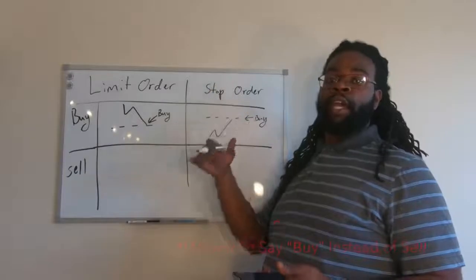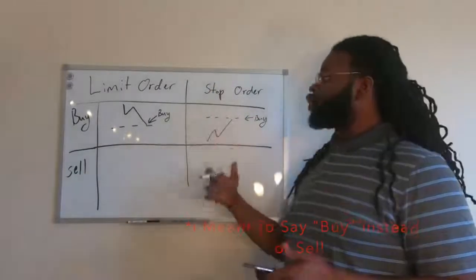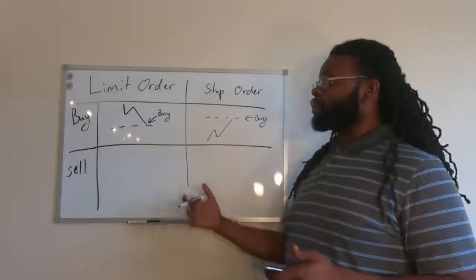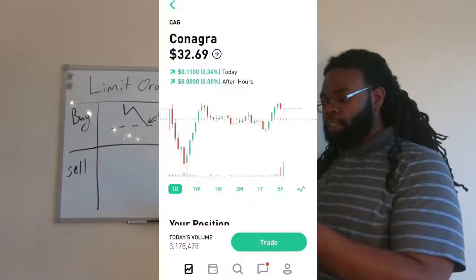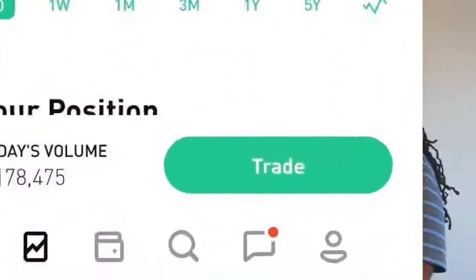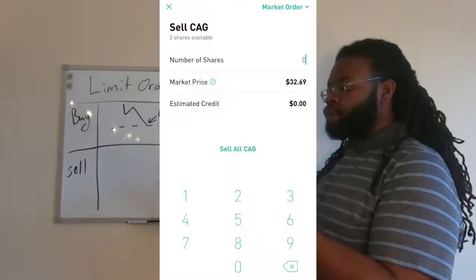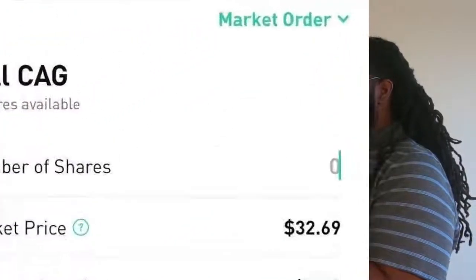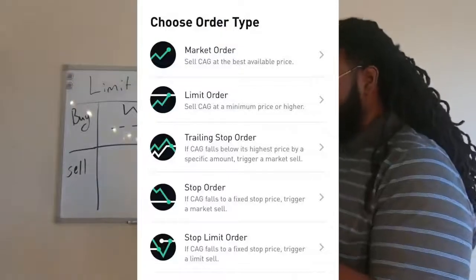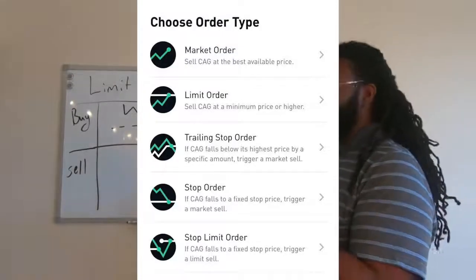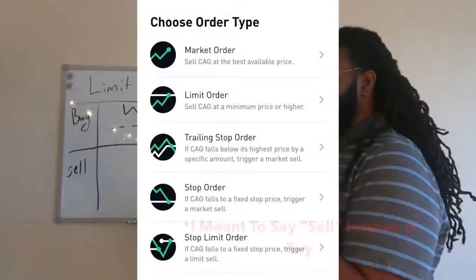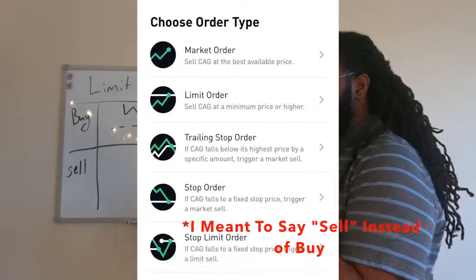If you want to place a limit or stop order sale, you will go to your preferred stock. In this case, Conagra. You're going to tap on Trade and click on Sale. In the top right corner, you're going to click Market Order, and you'll see the same type of drop-down list that we did when we saw the Buy screen. Market orders when you buy the current market price.